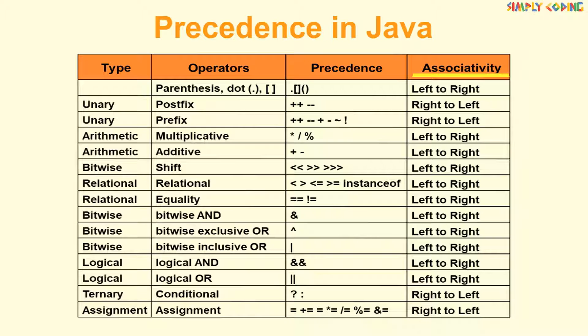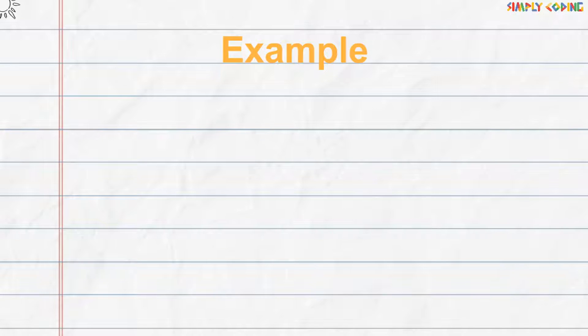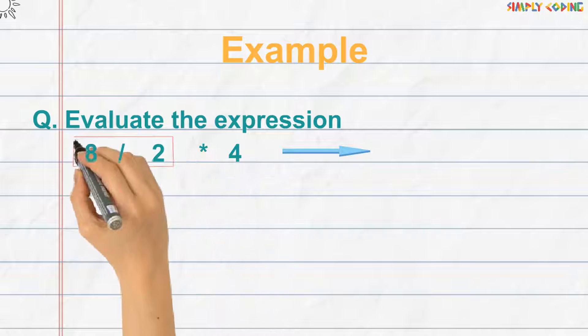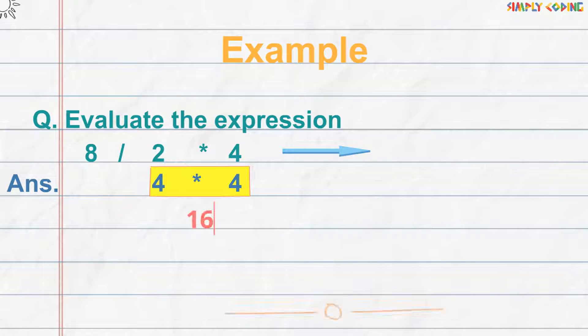Along with precedence, Java also defines associativity. Associativity defines the grouping or order of evaluation when there are operators of same precedence. For example, here we have both multiplication and division. So which one will get executed first? Since associativity is left to right, first division is done and then multiplication.